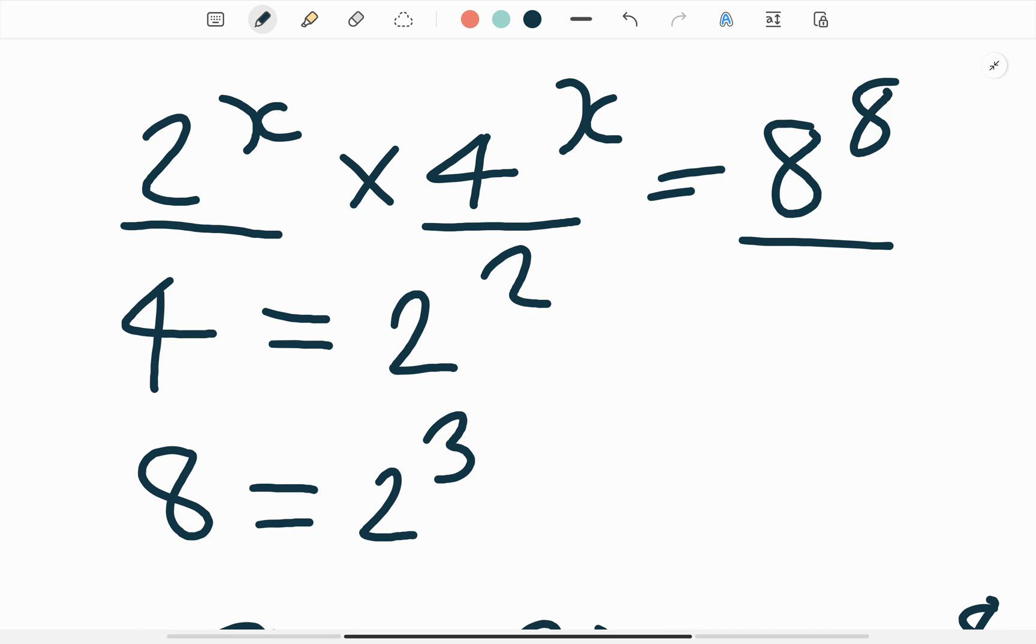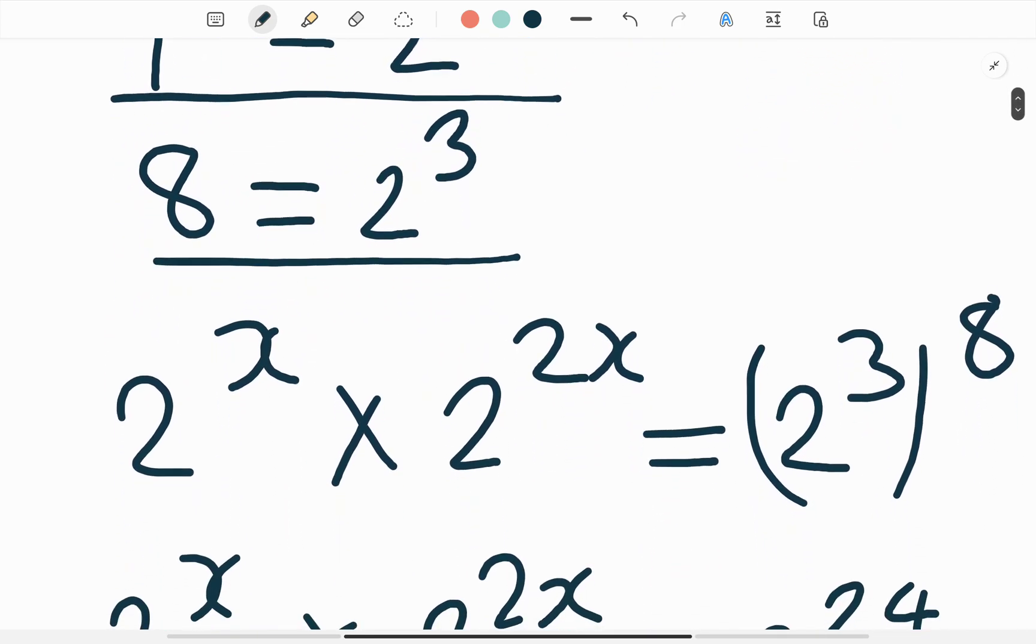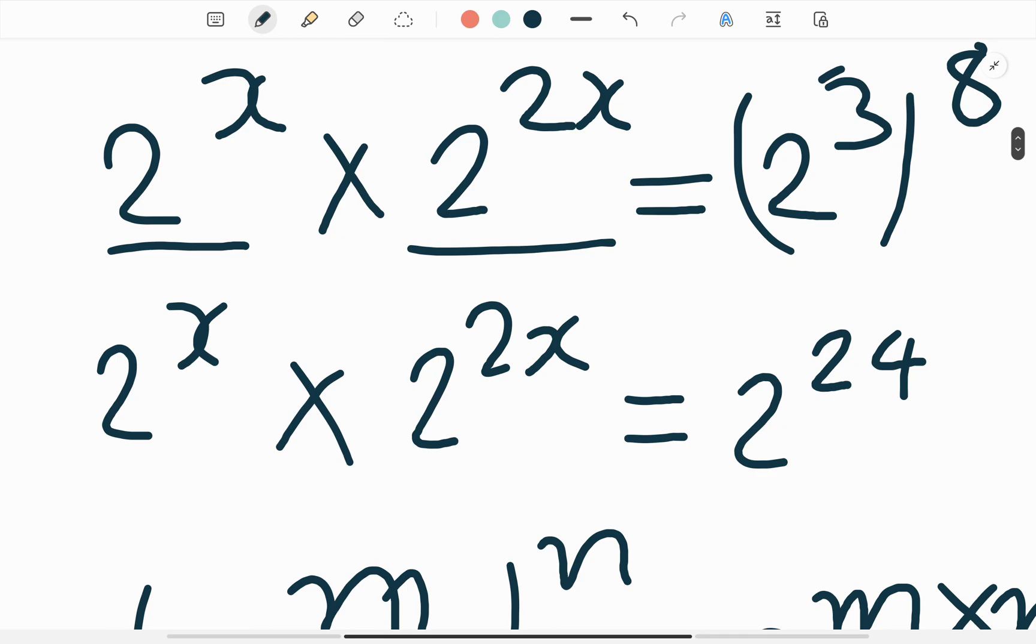We write 4 as 2 to the power 2 and 8 as 2 to the power 3. Now we write as 2 to the power x multiply 2 to the power 2x is equal to 2 to the power 3 whole power 8.